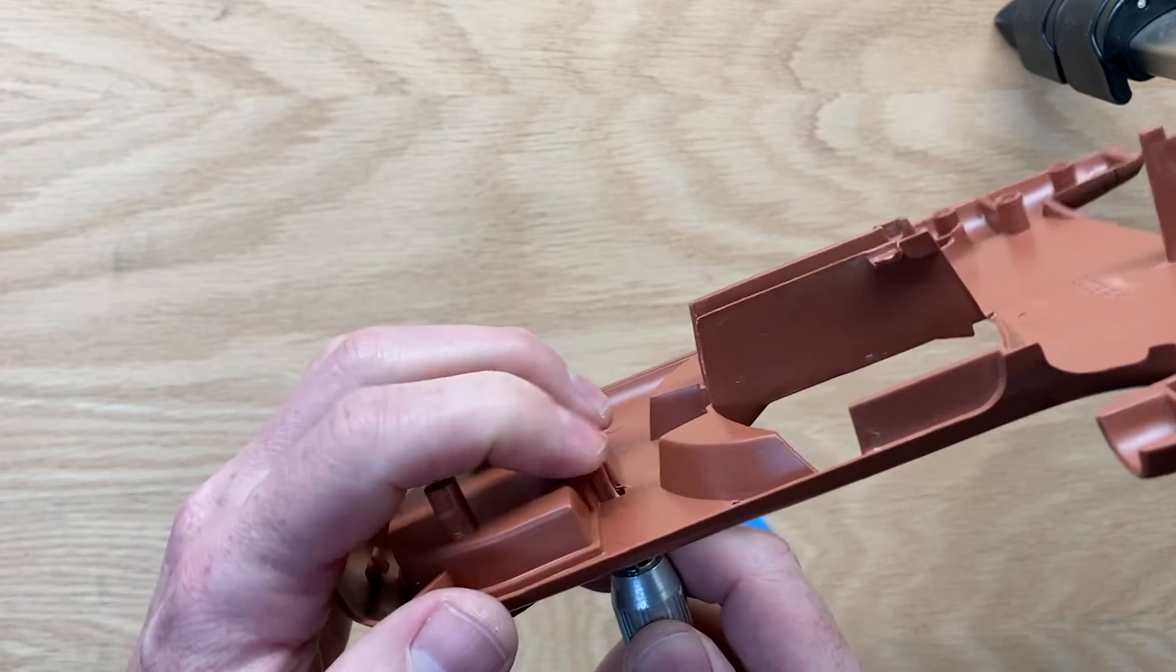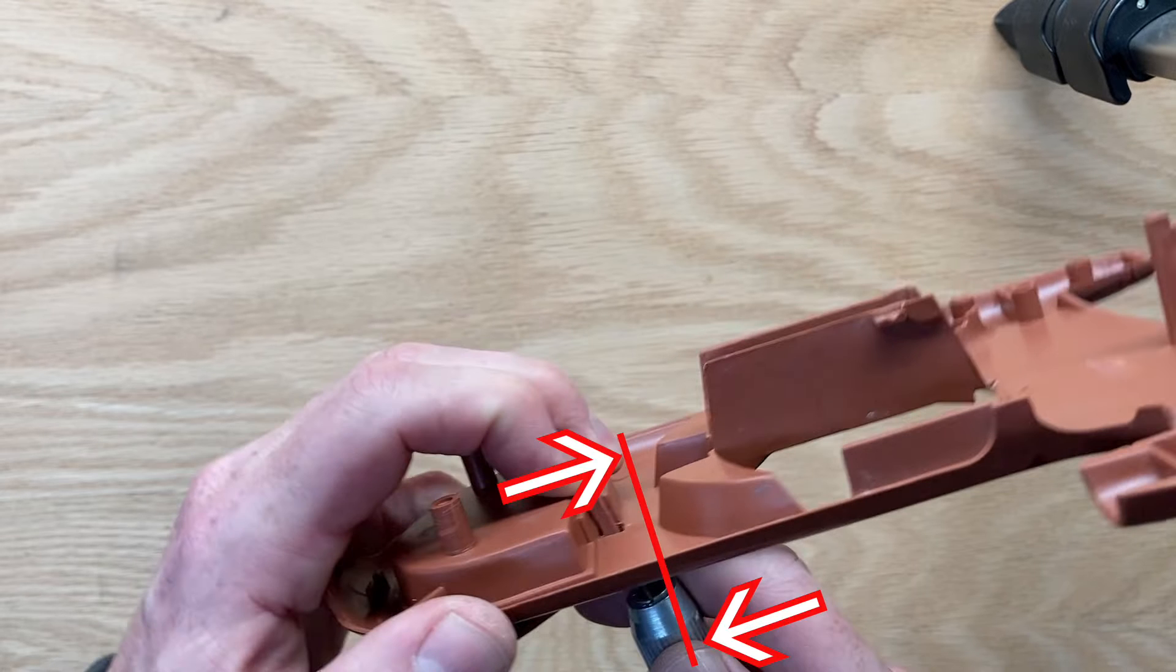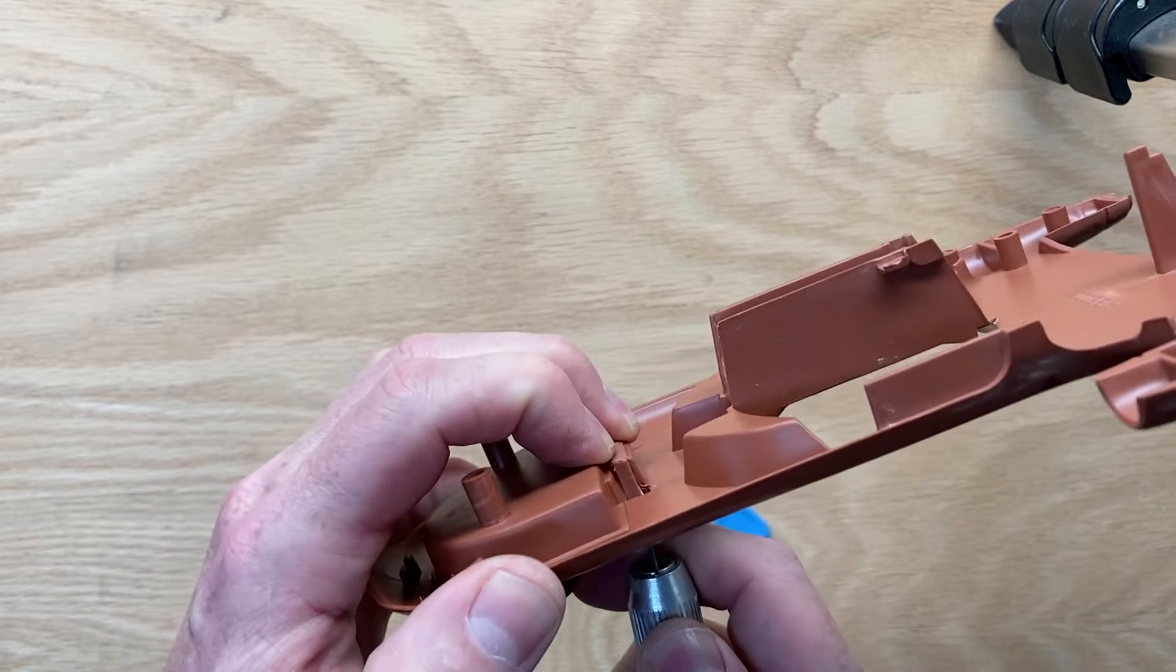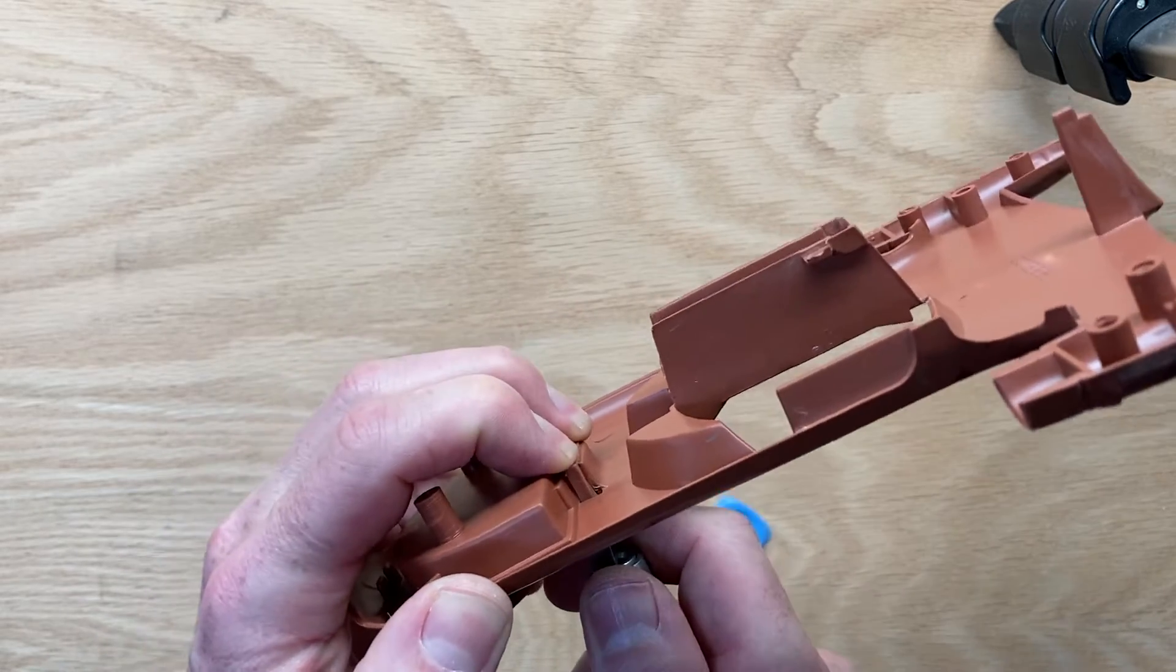So you put the knife in here and you start levering the handle of the knife towards the front of the land speeder, which pushes the tab that's holding the hinge in place towards the back.